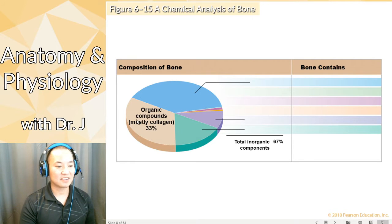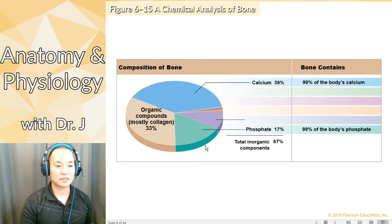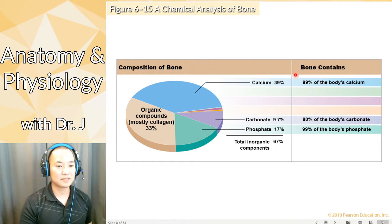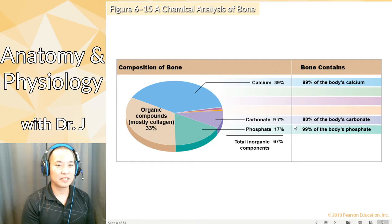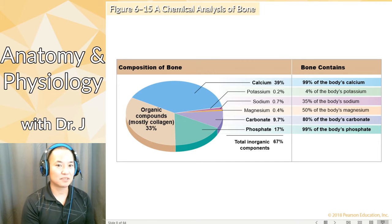You have inorganic components — calcium is pretty much the plurality of bone composition, much more than the organic compounds. Phosphate also makes up a big chunk of bone matrix, and there's also carbonate. Calcium and phosphate you definitely should know. Bone contains the vast majority of your body's calcium and phosphate, so bone is not only strong but also a big reservoir and bank of these ions and minerals. Major components: calcium, collagen, phosphate, carbonate.